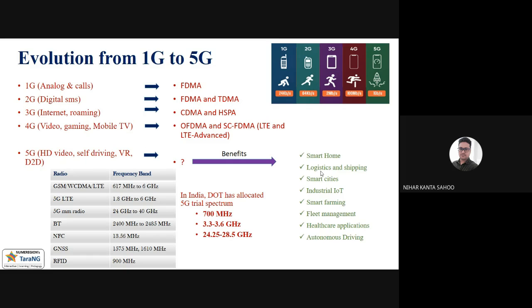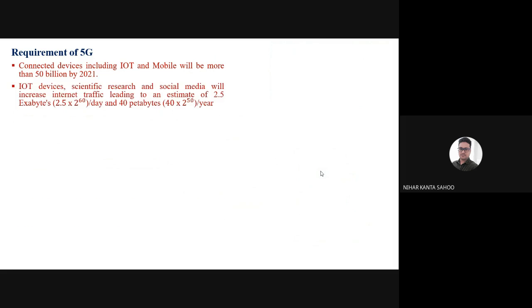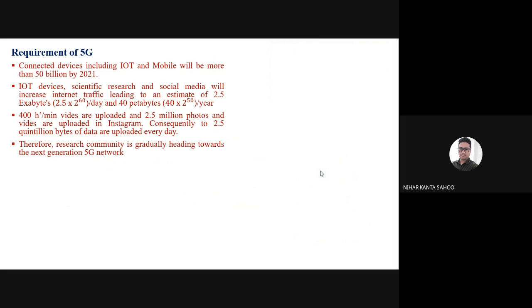So what are the benefits of 5G? We can make smartphones, logistic shipping, smart cities, industrial IoT, healthcare applications, autonomous driving. Those facilities can be available with 5G due to the large bandwidth. Now main question is what is the requirement of 5G? Why we require 5G? If you see the first point, IoT and mobile will be more than 50 billion by 2021. And IoT device due to scientific research and social media will increase the internet traffic and it will be nearby 40 petabytes per year. So it will be huge. Due to this YouTube video loading, Instagram photographs, Facebook, social media, nearby 2.5 million bytes of data are uploaded every day. Therefore, the research community from 2012 started researching about the 5G network. This is why due to this large data and large user, huge number of users, we require 5G.